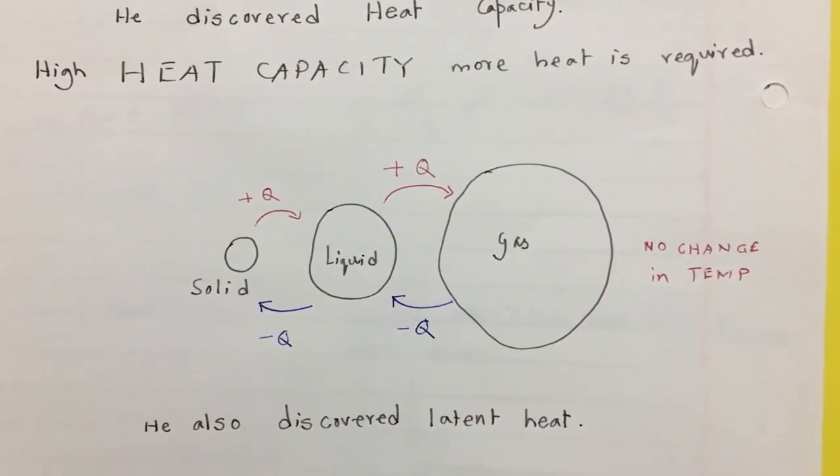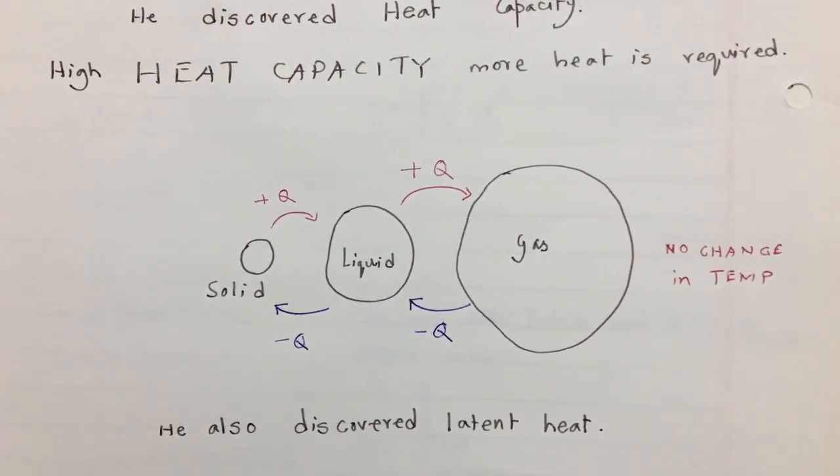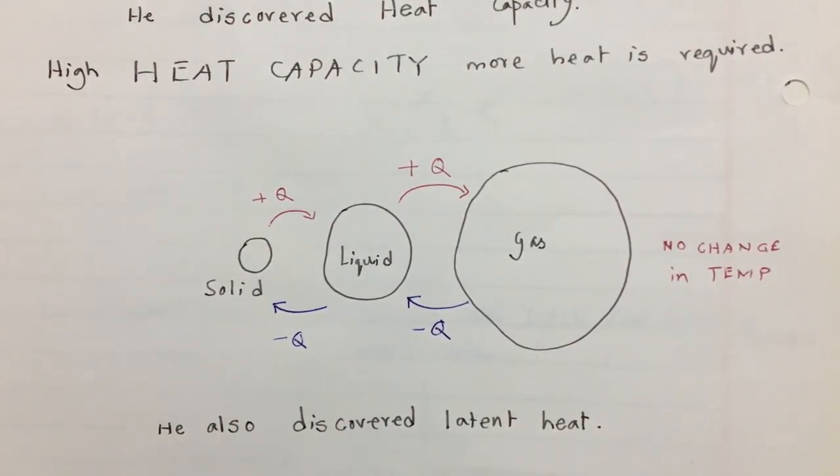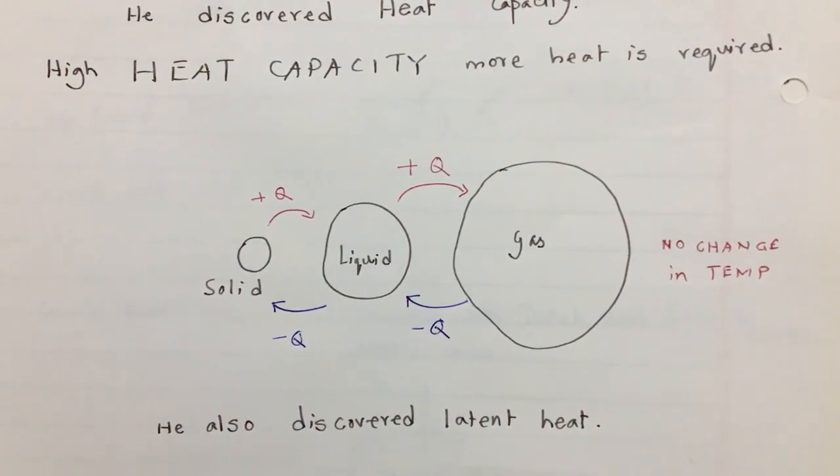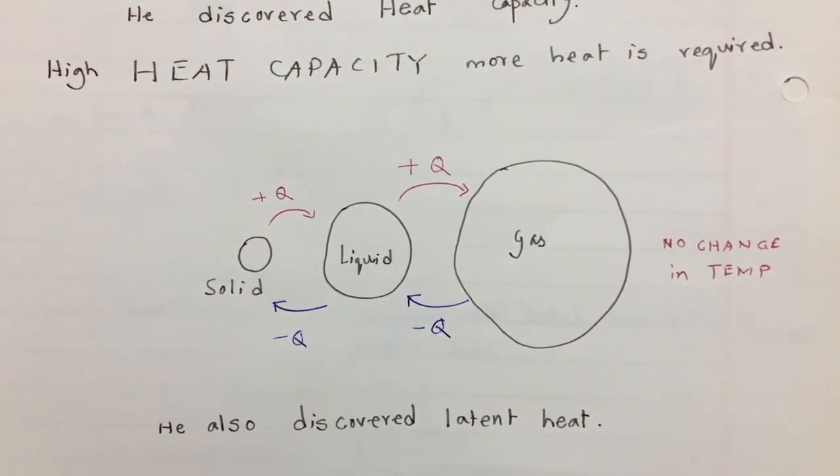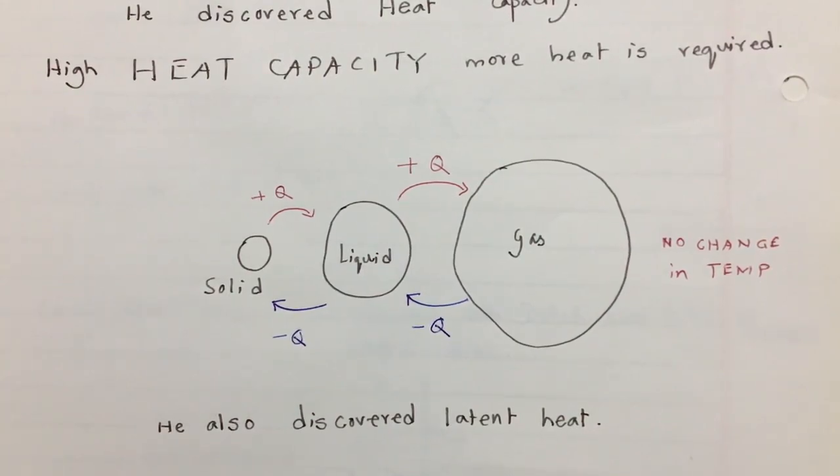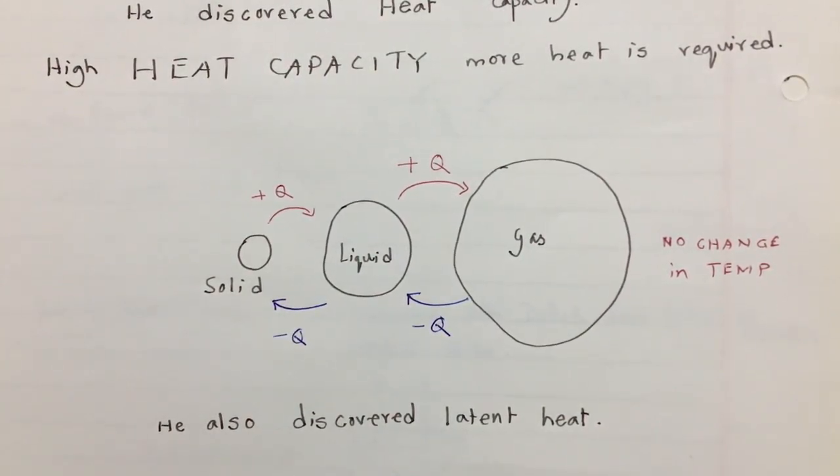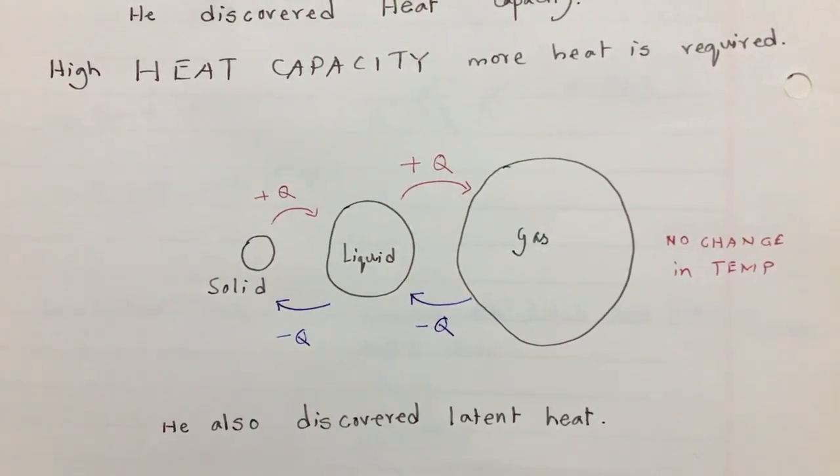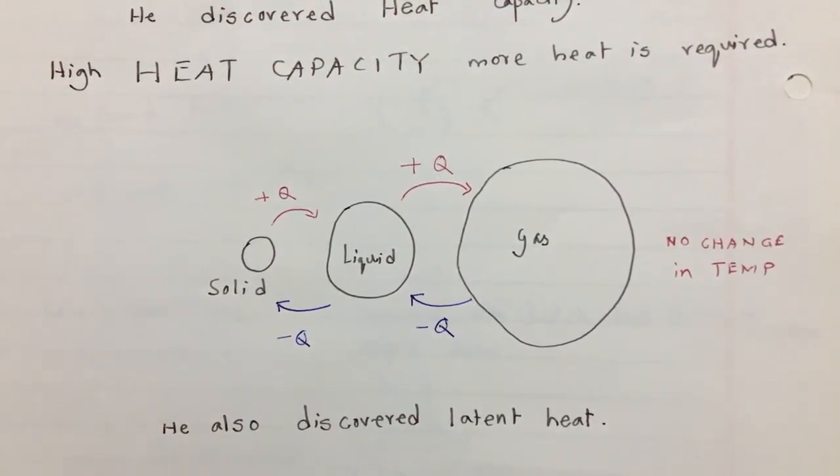Phase change heat will be used to change the phase of the substance, from solid to liquid or vice versa, from liquid to gas or vice versa. But there is no change in temperature because of the latent heat. Latent means hidden, so it is undetected in the thermometer.